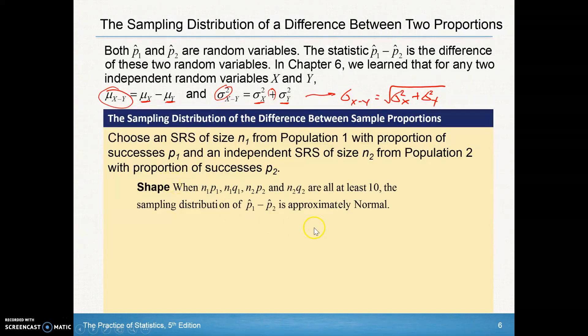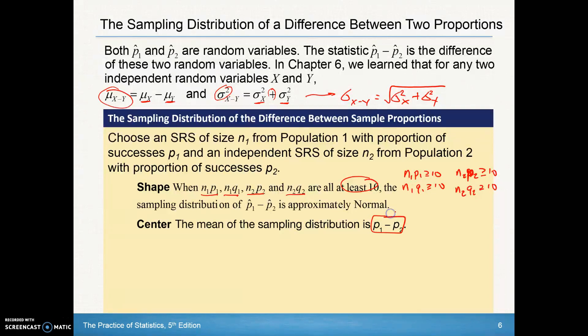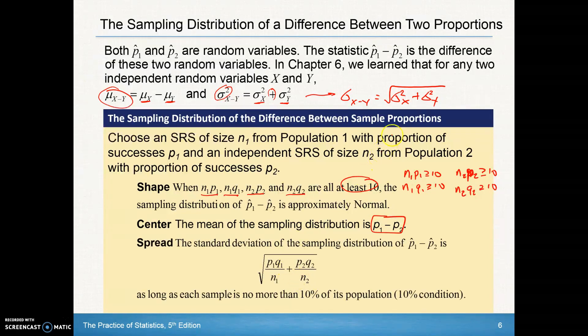The shape of the distribution will be approximately normal if we can show that N1 times P1, N1 times Q1, N2 times P2, and N2 times Q2 are all at least 10. This is in the N part of our conditions. All four of these must be shown to be greater than or equal to 10. The center is just the difference between the two. The spread goes back to the idea that we add and then square root those variances to get the standard deviation of the difference.